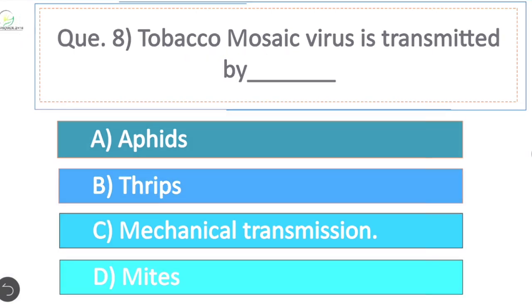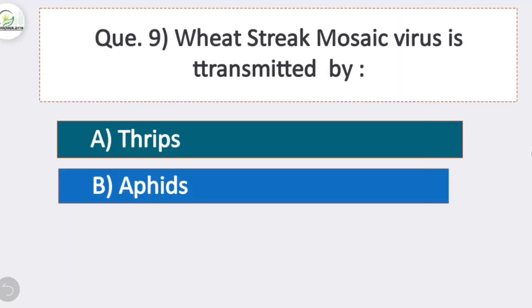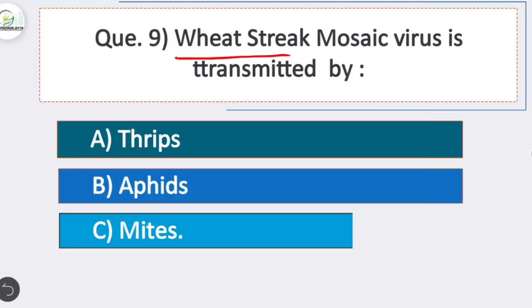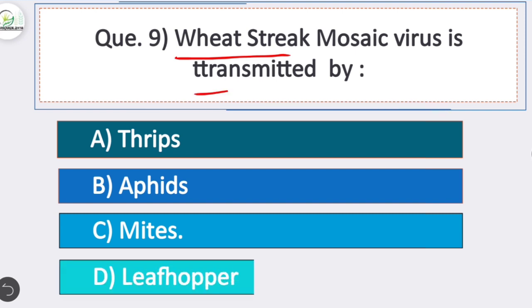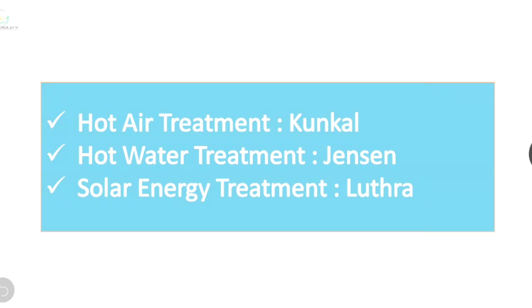Question 9: wheat streak mosaic virus is transmitted by? Option C is correct — mites. Wheat streak mosaic virus infects wheat and is transmitted by the wheat curl mite.